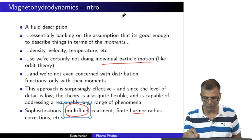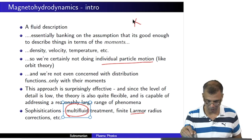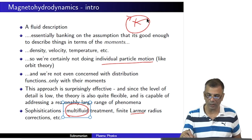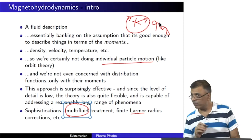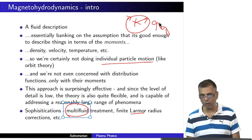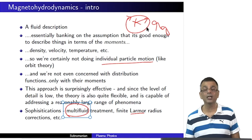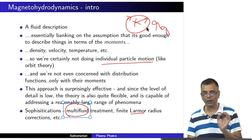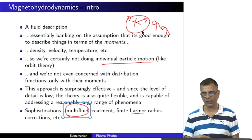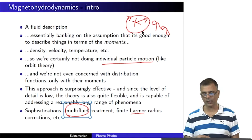Consider a magnetic field into the plane of the screen and a charged particle gyrating — this is called Larmor motion, and the radius of gyration is the Larmor radius. Even though we are not considering individual particle motion in its full glory, one can modify a fluid treatment to account for the fact that the Larmor radius is indeed finite. In pure magnetohydrodynamics, there is no Larmor radius — it is technically zero.